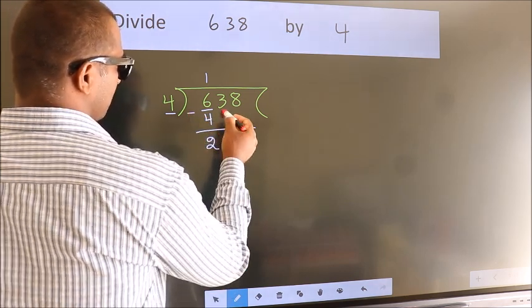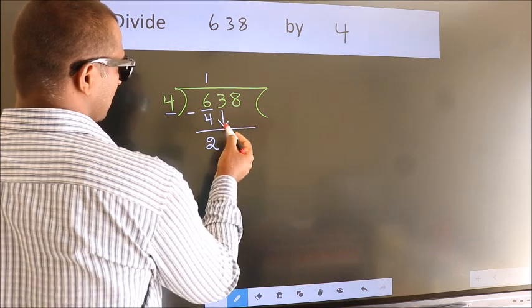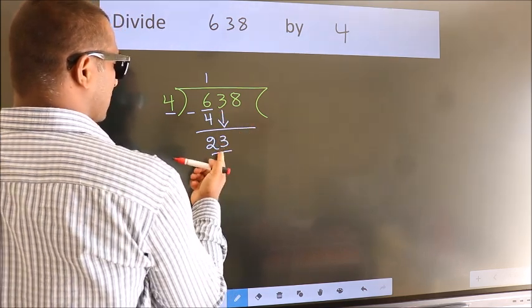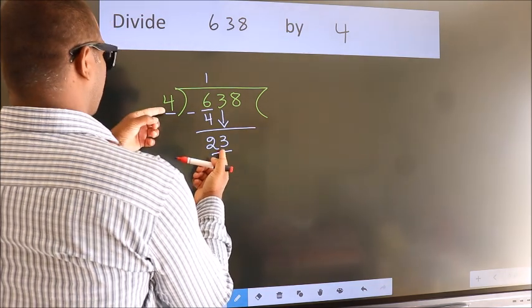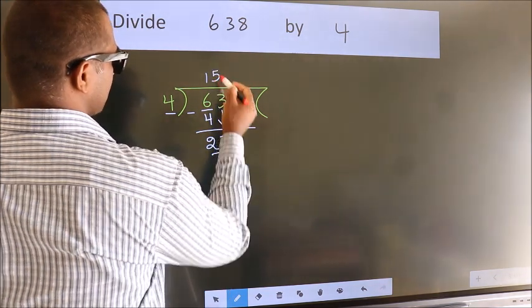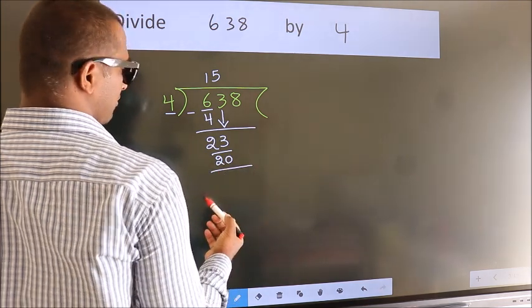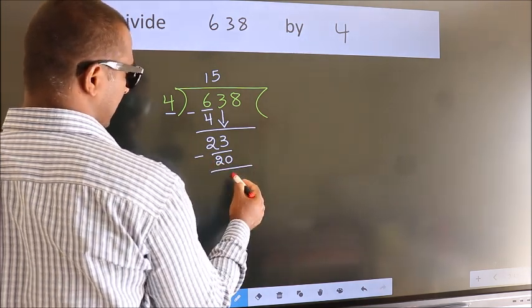After this, bring down the next number, so 3 down, making 23. A number close to 23 in the 4 table is 4 times 5 equals 20. Now we subtract and get 3.